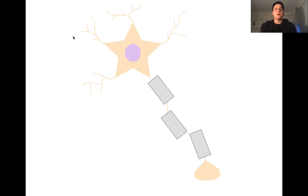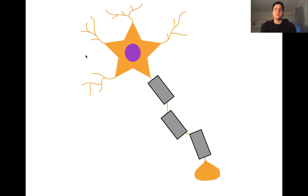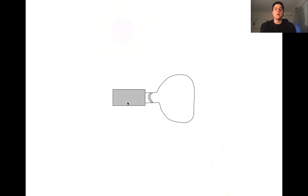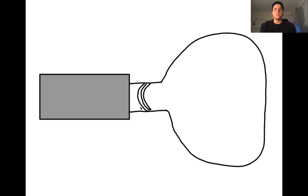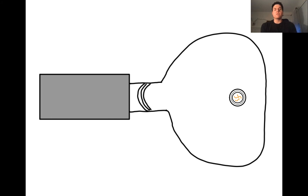Let's start off with a neuron. What we're going to do is zoom in at the synaptic terminal. Now inside the synaptic terminal, we have vesicles, and these vesicles are going to be packaged with neurotransmitters. The vesicles are going to be stored in a specialized region called the active zones, and these vesicles will not be released until a signal approaches them.